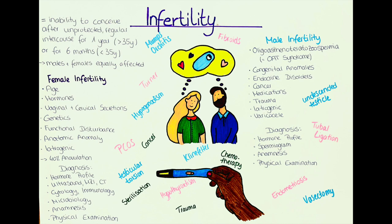If you want to know more about polycystic ovarian syndrome, pelvic inflammatory disease, endometriosis and adenomyosis, and uterine fibroids, we have separate videos on those in the gynecology playlist. The most common cause for infertility in women is anovulation, which occurs in around 40% of women struggling with infertility. Failure to ovulate can be due to primary ovarian insufficiency, polycystic ovarian syndrome, obesity, or hypothyroidism.